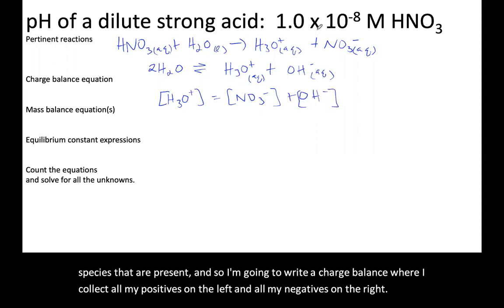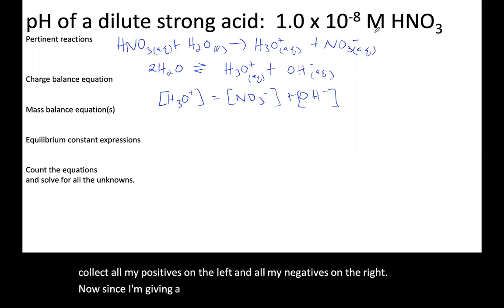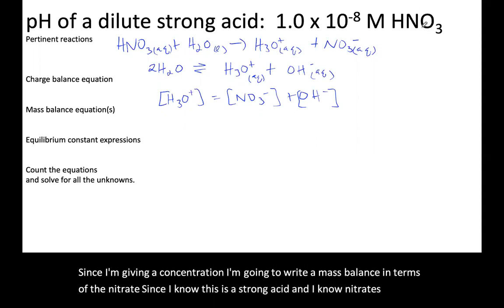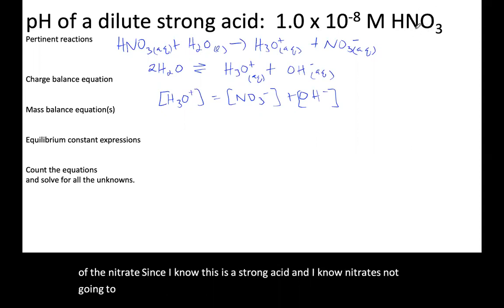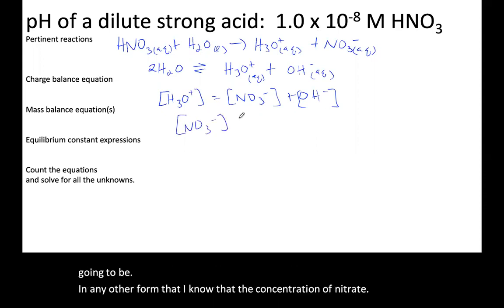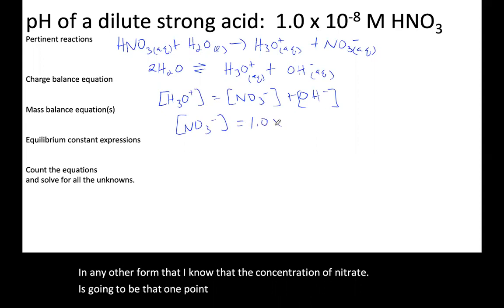Now, since I'm given a concentration, I'm going to write a mass balance in terms of the nitrate. Since I know this is a strong acid, and I know nitrate's not going to be in any other form, then I know that the concentration of nitrate is going to be that 1.0 times 10 to the negative 8.